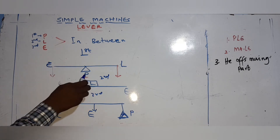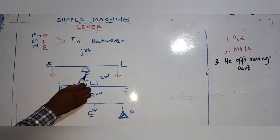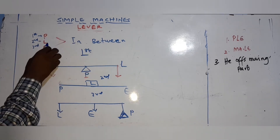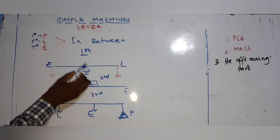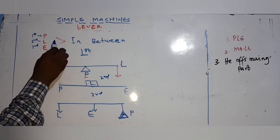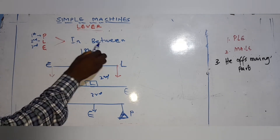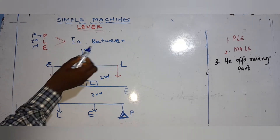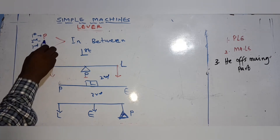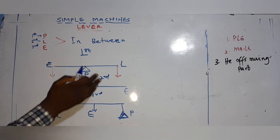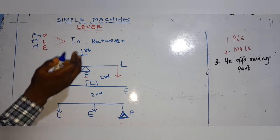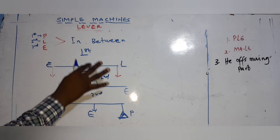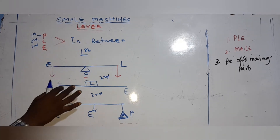Definitions: A first class lever is a lever where the pivot is in between the load and the effort. A second class lever is a lever where the load is in between the pivot and the effort. A third class lever is a lever where the effort is in between the pivot and the load.